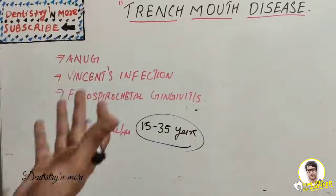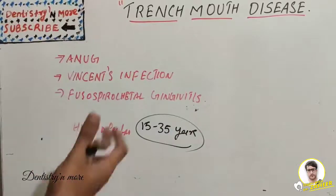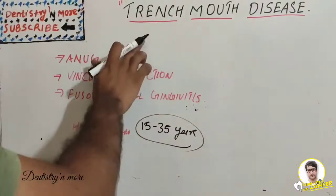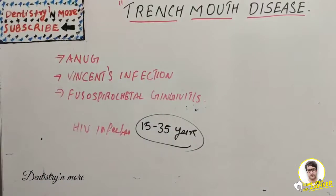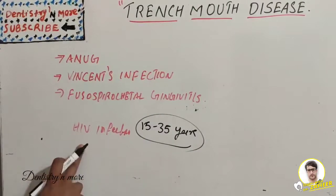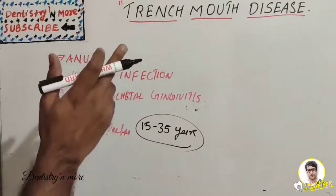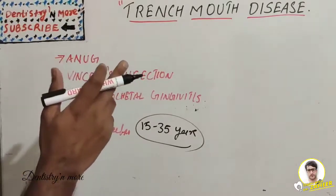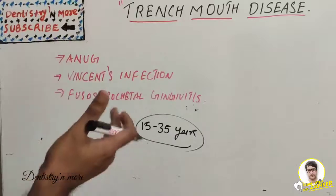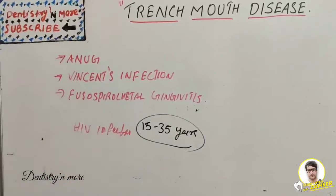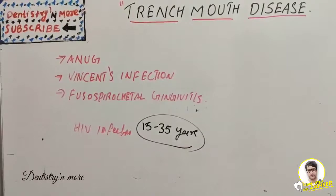It was first seen as an epidemic during the First World War among soldiers who were in trenches, which is how it got the name trench mouth disease. It has increased prevalence associated with HIV infection and is more commonly seen among young and middle-aged adults, around 15 to 35 years of age.